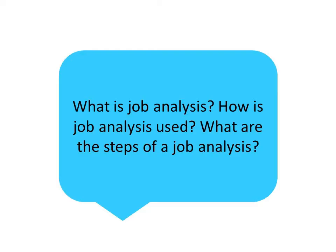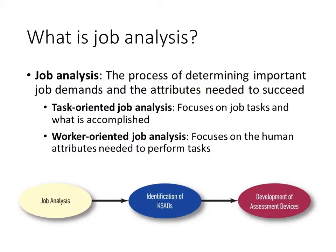In part one, I'm going to define job analysis and explain what we use it for and what the process looks like. One of the most important tools that IO psychologists use in their work is job analysis. This is the process of studying a job by identifying the job tasks, the job demands, and the characteristics that employees need in order to succeed — we call them KSAOs: knowledge, skills, abilities, and other characteristics. Through this investigative process, we learn all there is to know about a specific job, which then allows us to make decisions about that job and about the people who work in it.